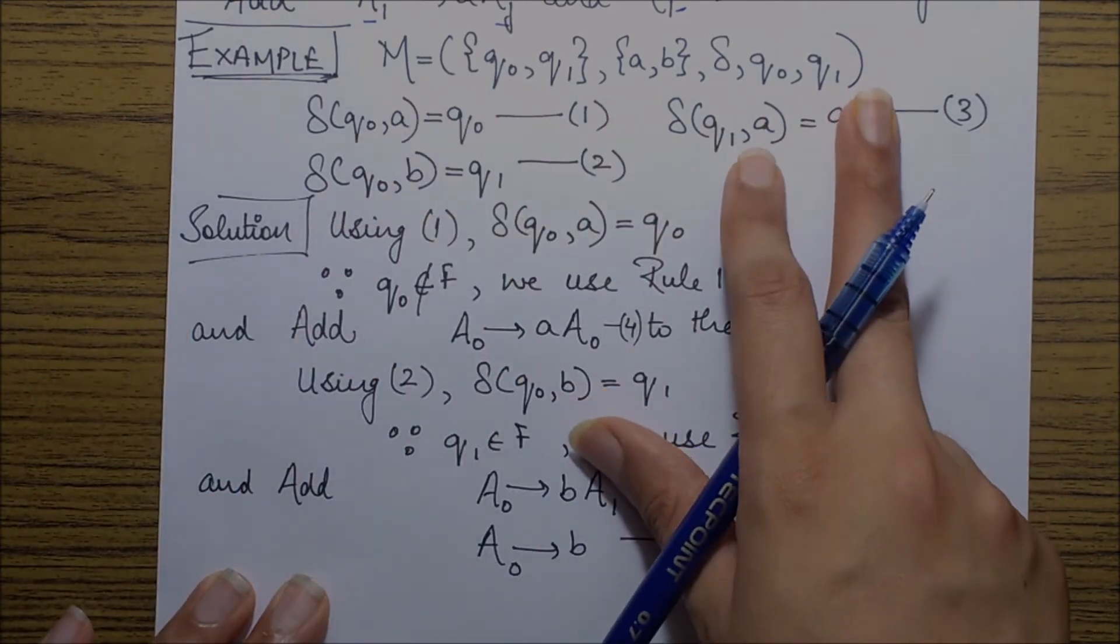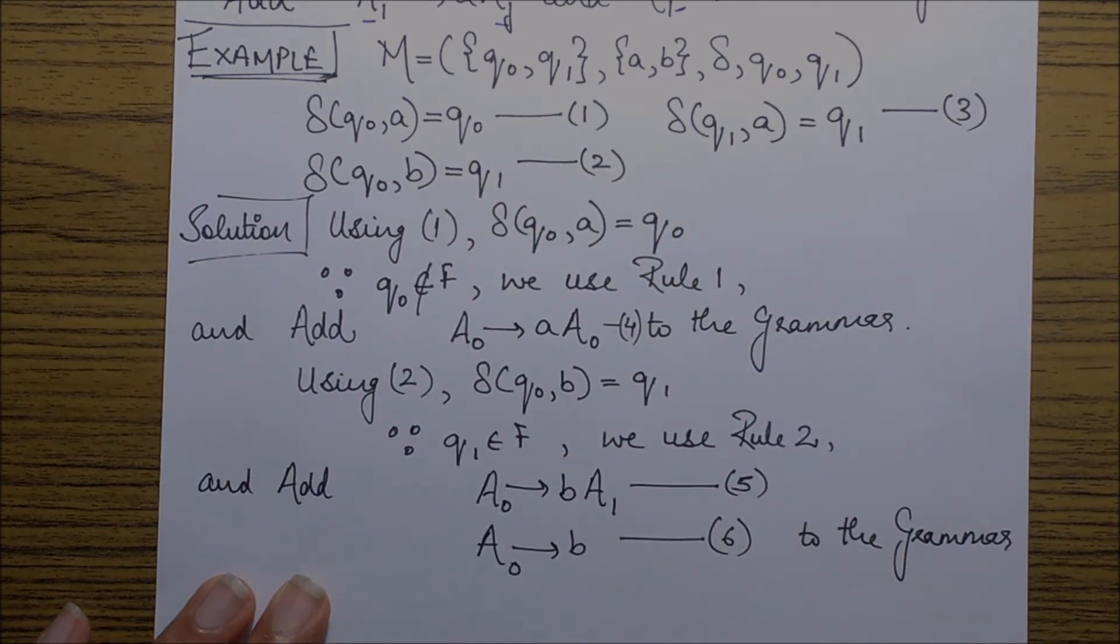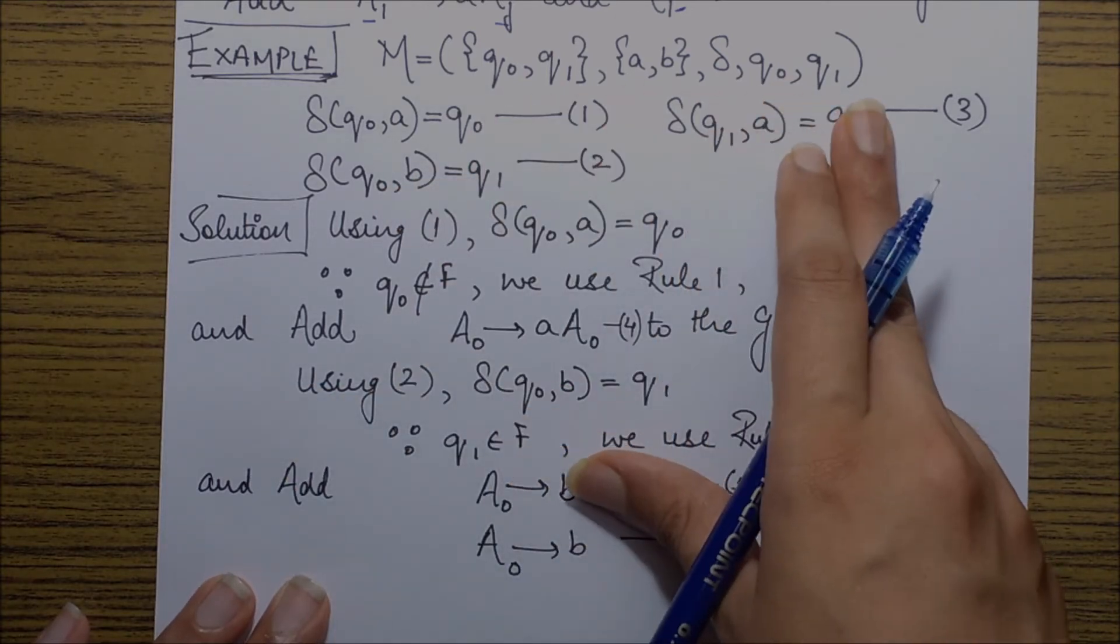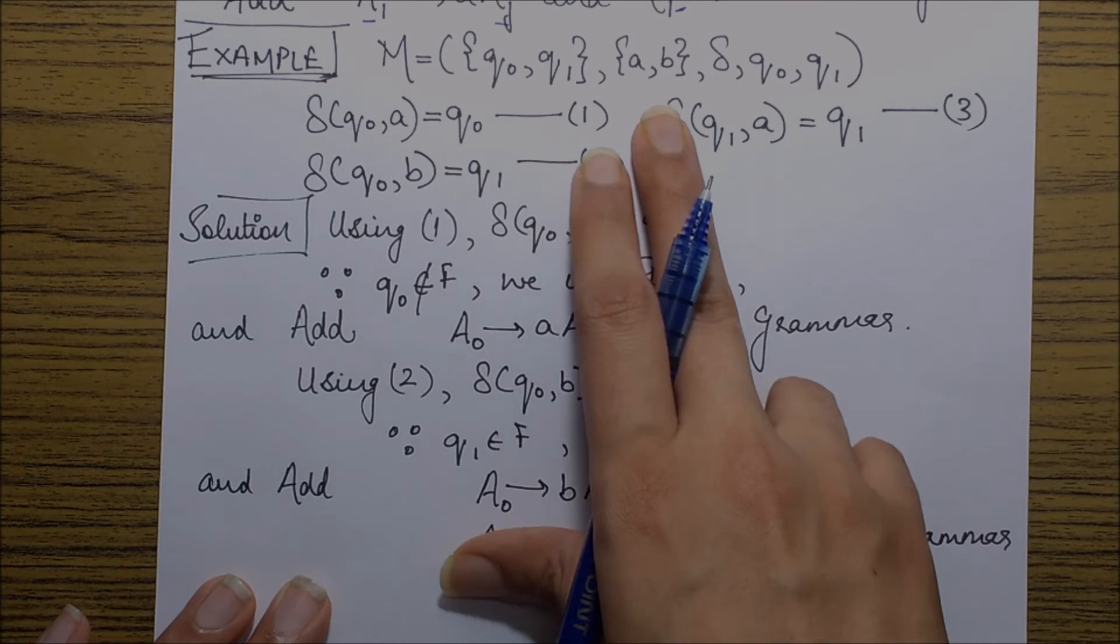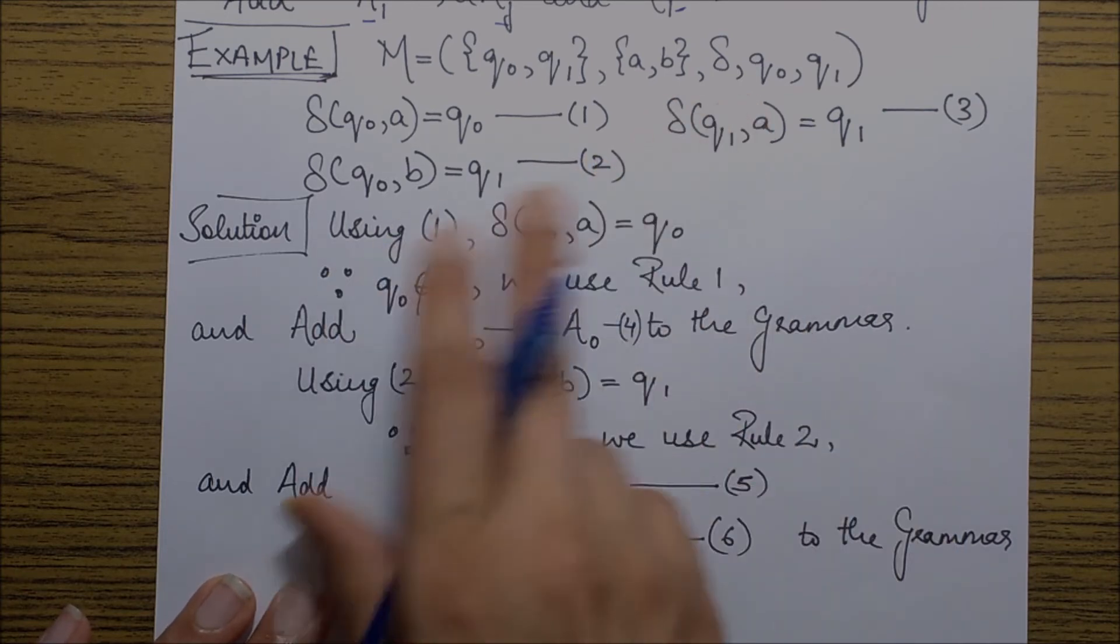So this is an example where we've been given a machine which has two states q naught and q1, and q naught is specified as the initial state, q1 as the final state.